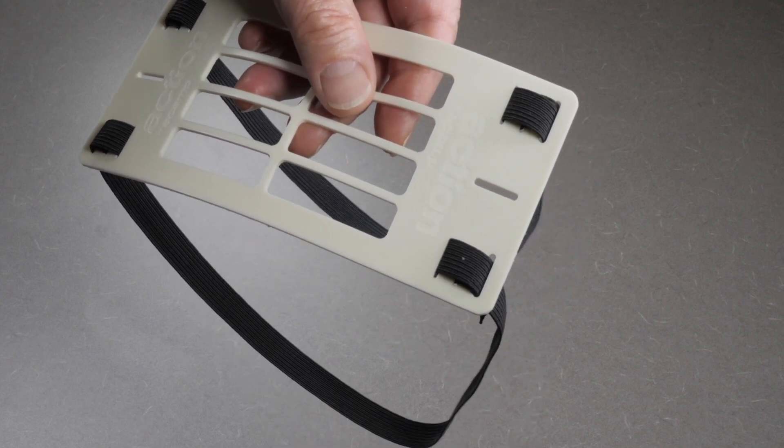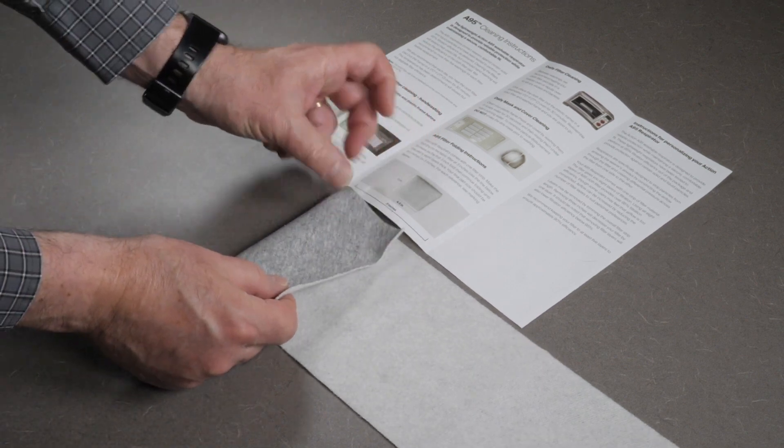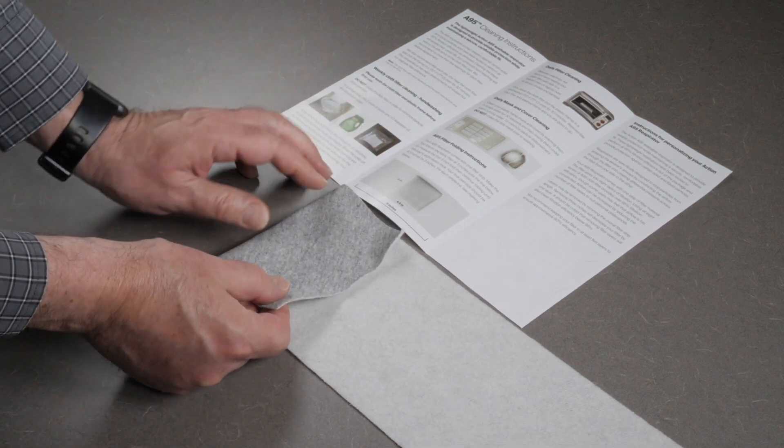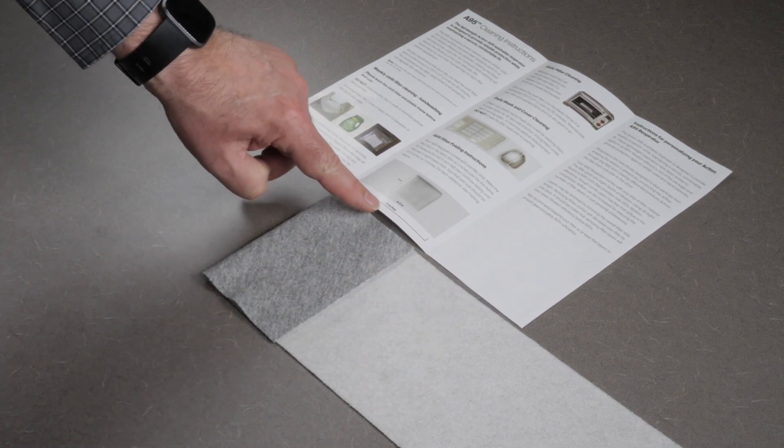Folding your filter isn't difficult, it just takes some practice. You were given at least 27 inches of filter material in your kit. After a lot of testing, we found that the first fold should be three inches.